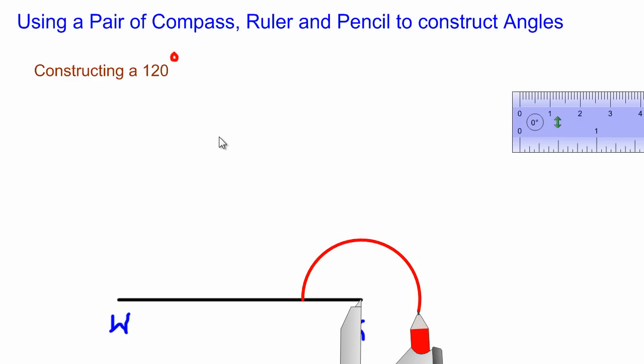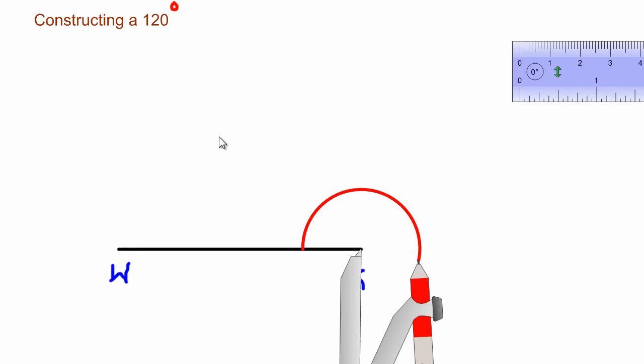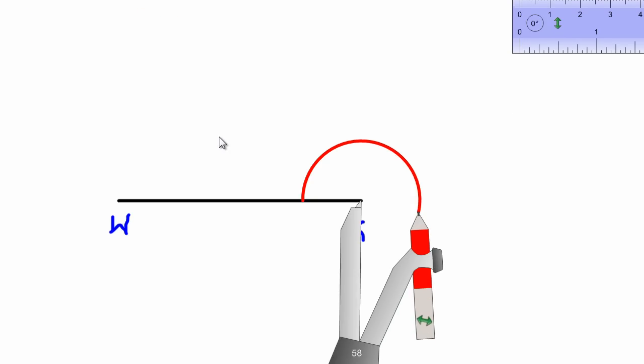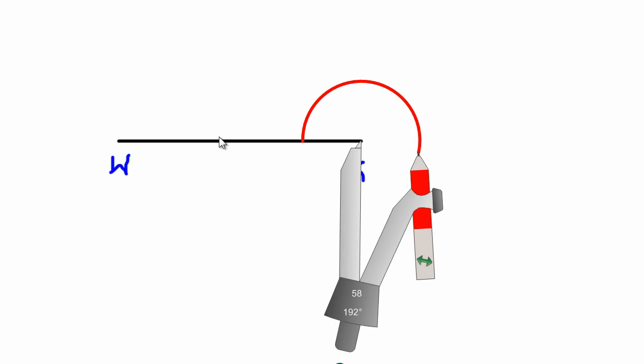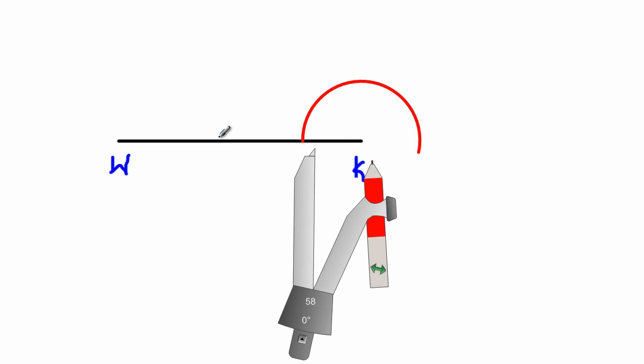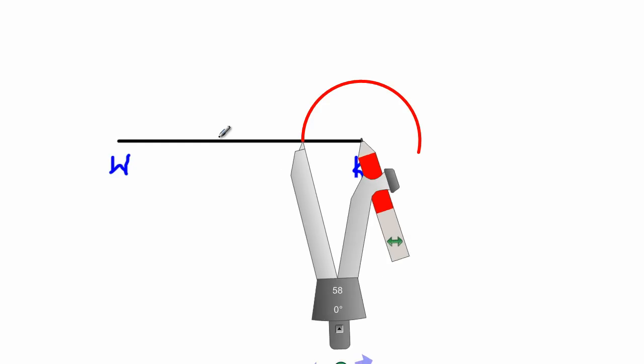After the arc has been swung, I am going to take my compass and place it at this point where the arc touches or cuts the line segment WK.